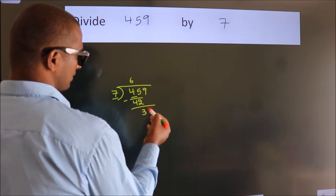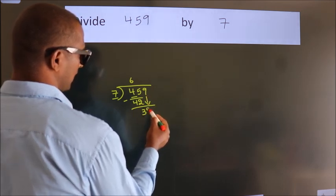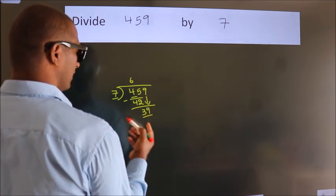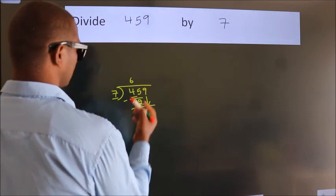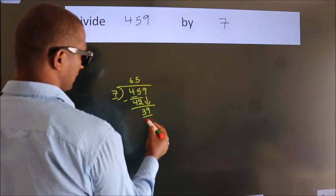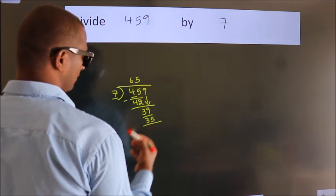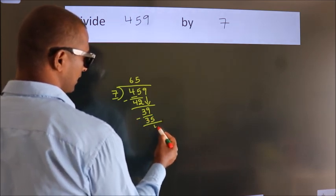After this, bring down the beside number. So, 9 down, giving us 39. A number close to 39 in the 7 table is 7 times 5, which is 35. Now we subtract and get 4.